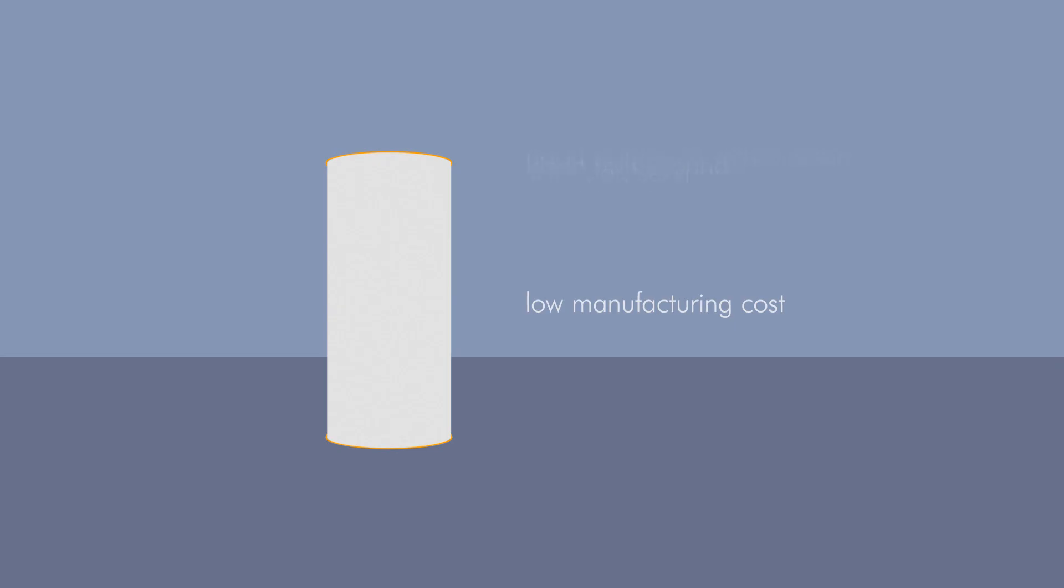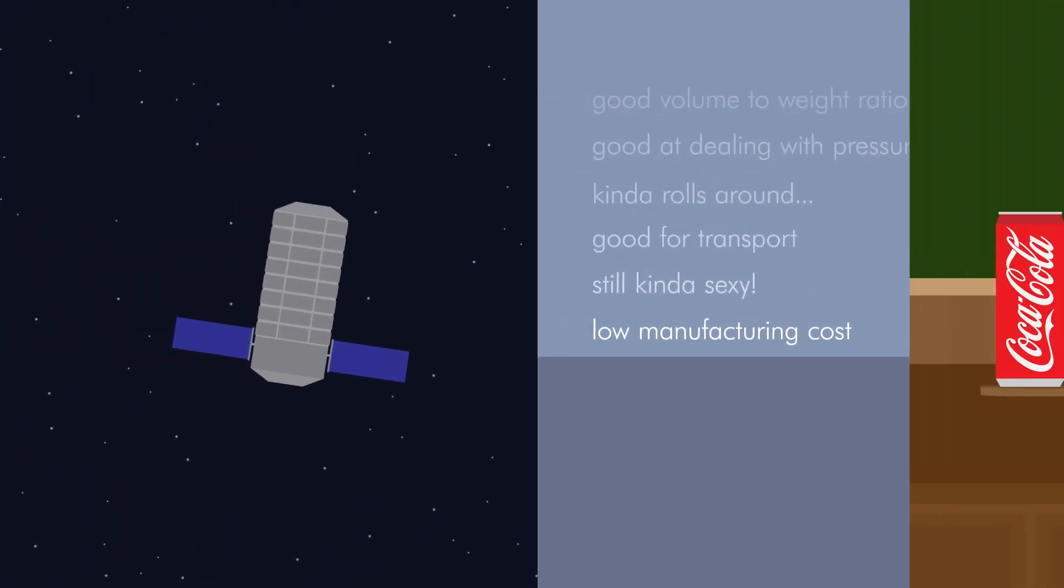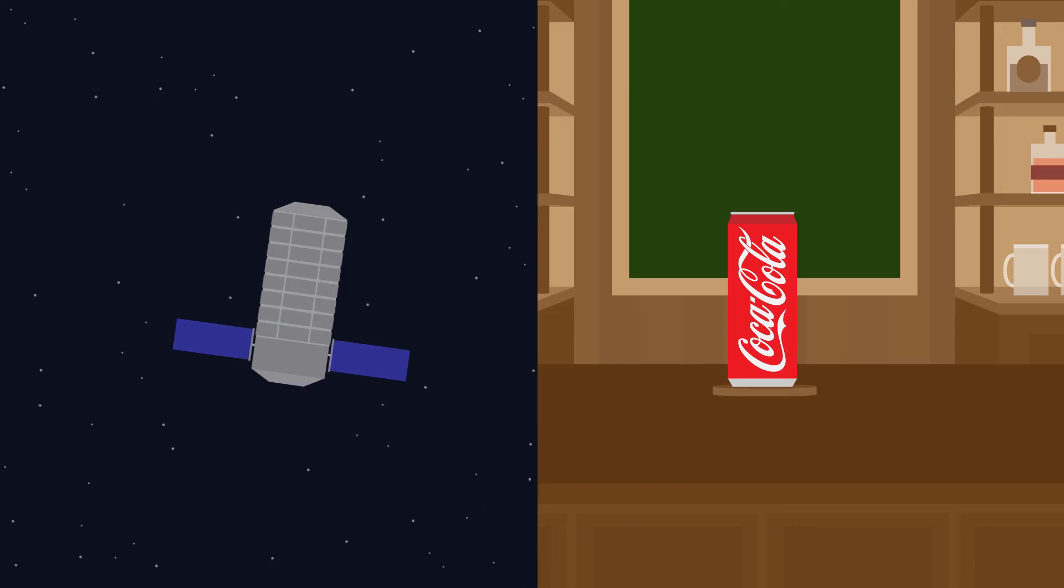This makes cylinders less expensive to manufacture compared to balls. Add the low cost of manufacturing to the points discussed before, and it should be clear why space modules look like soda cans. It's because cylinders are—